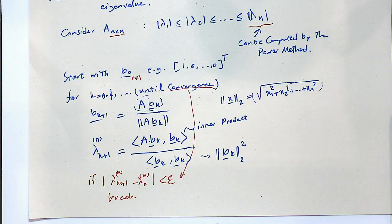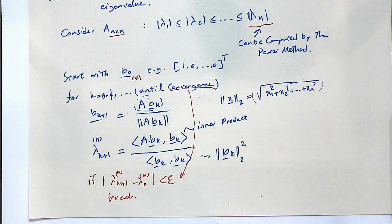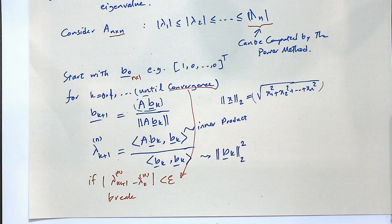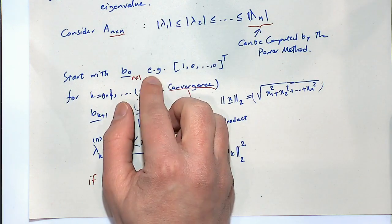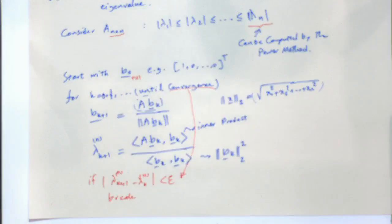What are the limitations of the power method? First, in its standard form it finds only the eigenvalue with the largest magnitude — though we can modify it to find others, one at a time. Unlike the QR method which gives all eigenvalues in one run, the power method finds them one by one. Second, the convergence rate depends on the ratio of the second-largest to the largest magnitude eigenvalue. If those two are close to each other, convergence is very slow.